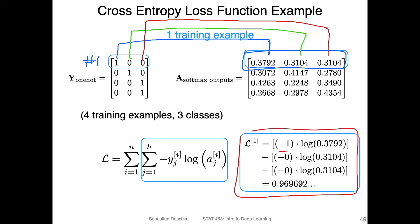So this is minus one times log of 0.37, and then the other terms here — but since y equals zero for those, they drop out. This is what we are computing when we are summing. For the first training example, we get a loss of 0.969 — point nine six nine. So this is our loss for the first training example.